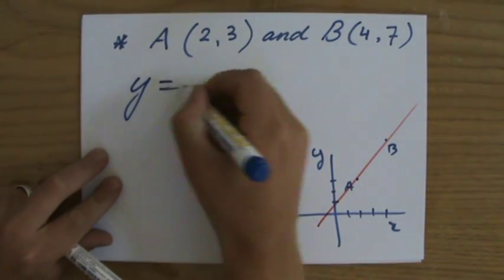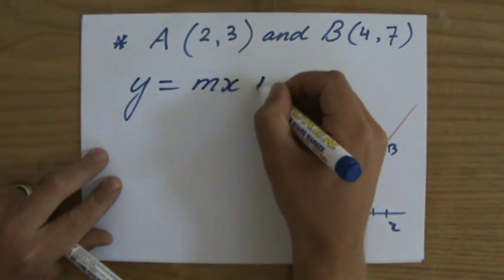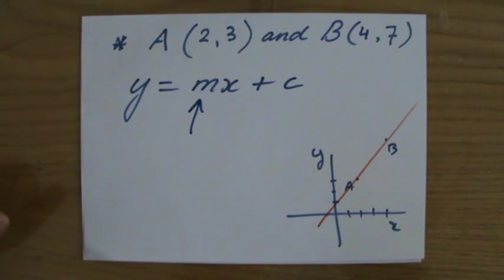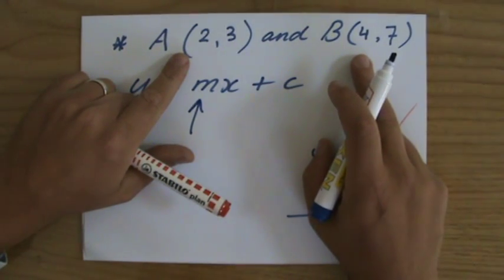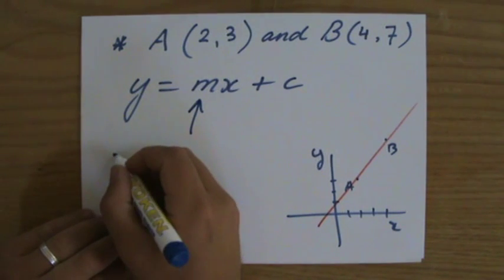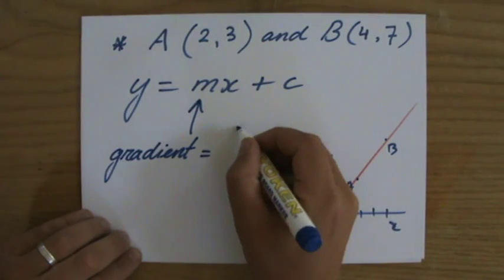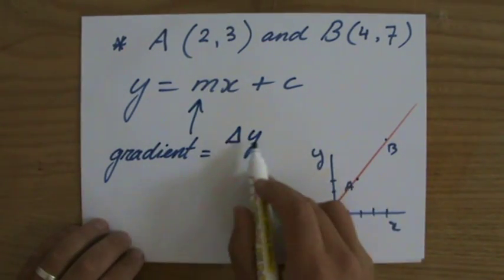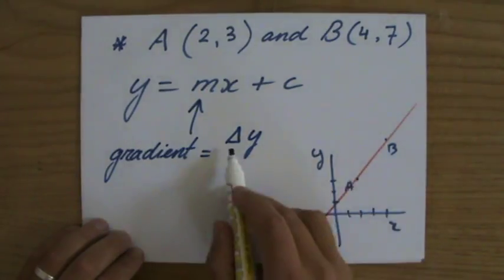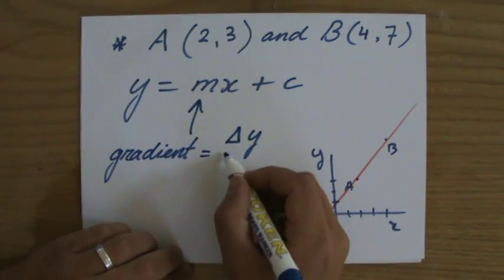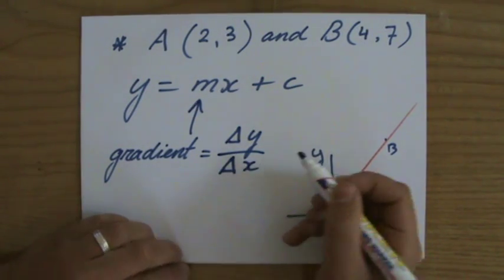So when I'm given two coordinates, let me write down always y equals mx plus c to start with. And I'm first going to calculate my gradient. So that's the coefficient of my x, m. And in previous videos, I've shown you how to calculate the gradient when given two coordinates.